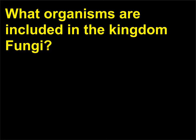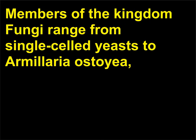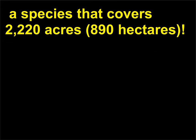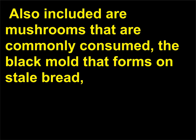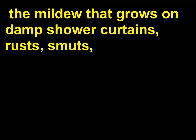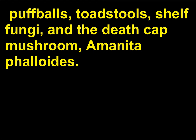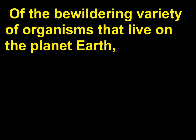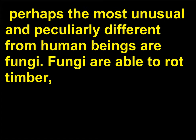What organisms are included in the kingdom fungi? Members of the kingdom fungi range from single-celled yeasts to Armillaria ostoyae, a species that covers 2,220 acres (890 hectares). Also included are mushrooms that are commonly consumed, the black mold that forms on stale bread, the mildew that grows on damp shower curtains, rusts, smuts, puff balls, toadstools, shelf fungi, and the death cap mushroom, Amanita phalloides. Of the bewildering variety of organisms that live on the planet Earth, perhaps the most unusual and peculiarly different from human beings are fungi.